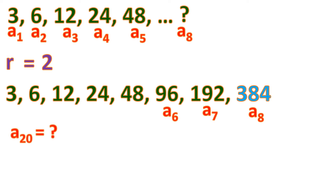But how about if you're tasked to find the 20th term? It sounds easy, but remember this is not an arithmetic sequence where you just keep adding — this is a geometric sequence where you keep multiplying, so numbers grow rapidly. We're already at 384 at the 8th term. To find the 20th term or other large terms, we need a general formula to find the nth term of a geometric sequence.